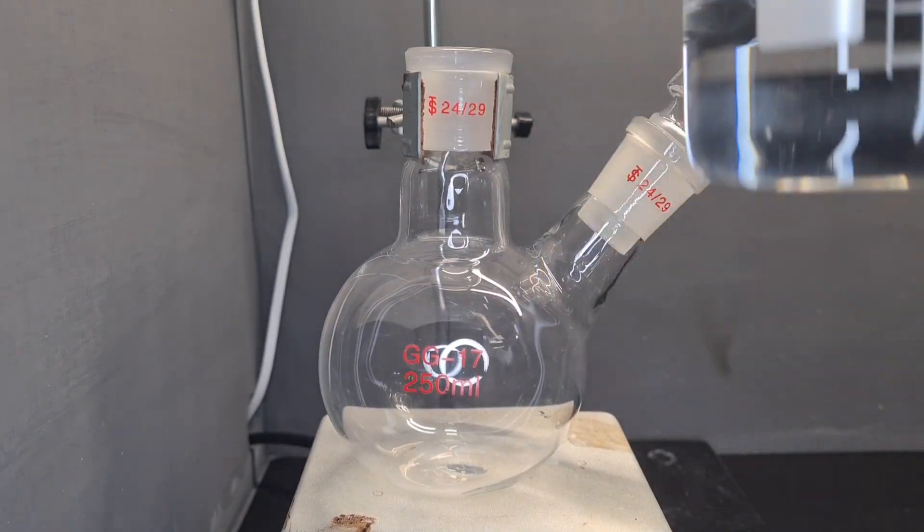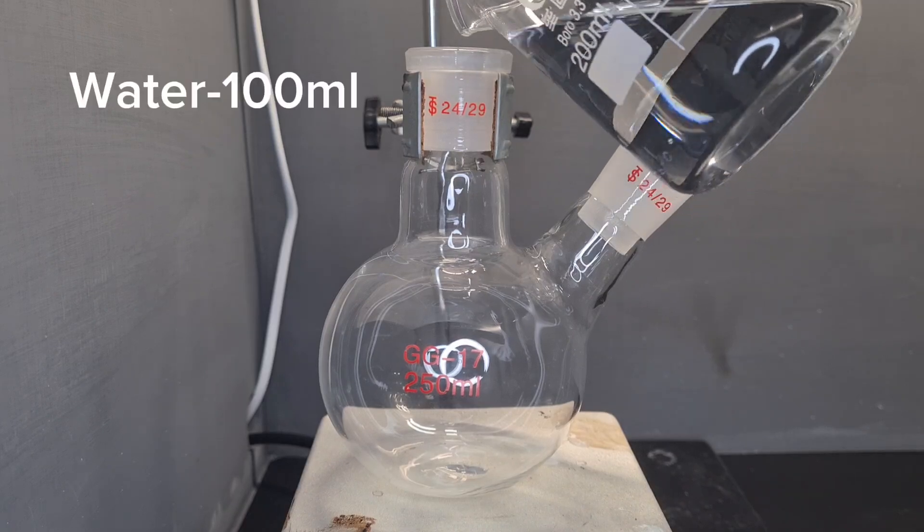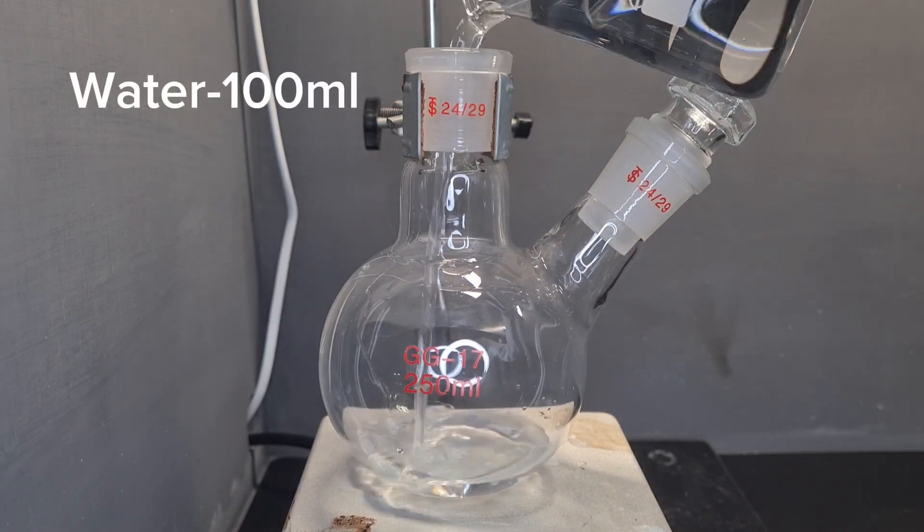Okay, so first we're going to add about 100 milliliters of water to a 250 milliliter two-neck round bottom flask.